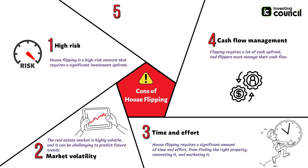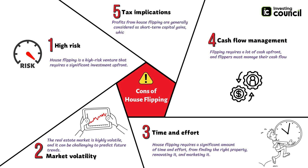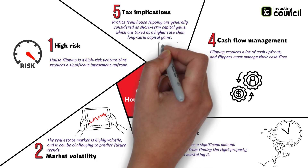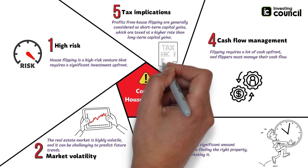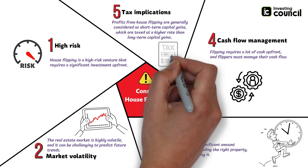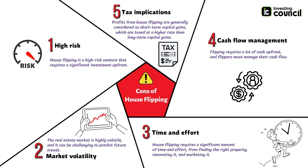The fifth and final main disadvantage is tax implications. Profits from house flipping are generally considered short-term capital gains, which are taxed at a higher rate than long-term capital gains. Flippers must consider the tax implications of their investment and factor them into their overall strategy.